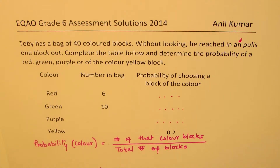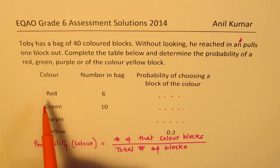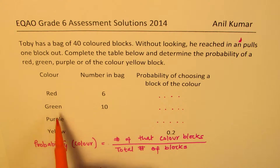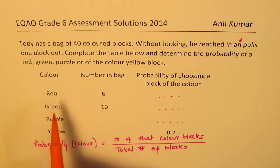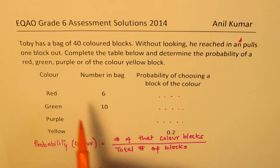Now in this particular video, we will show you two different ways of solving this question. In the first method, since there are only four colored blocks, the total probability will be 1, so let's use that and solve.